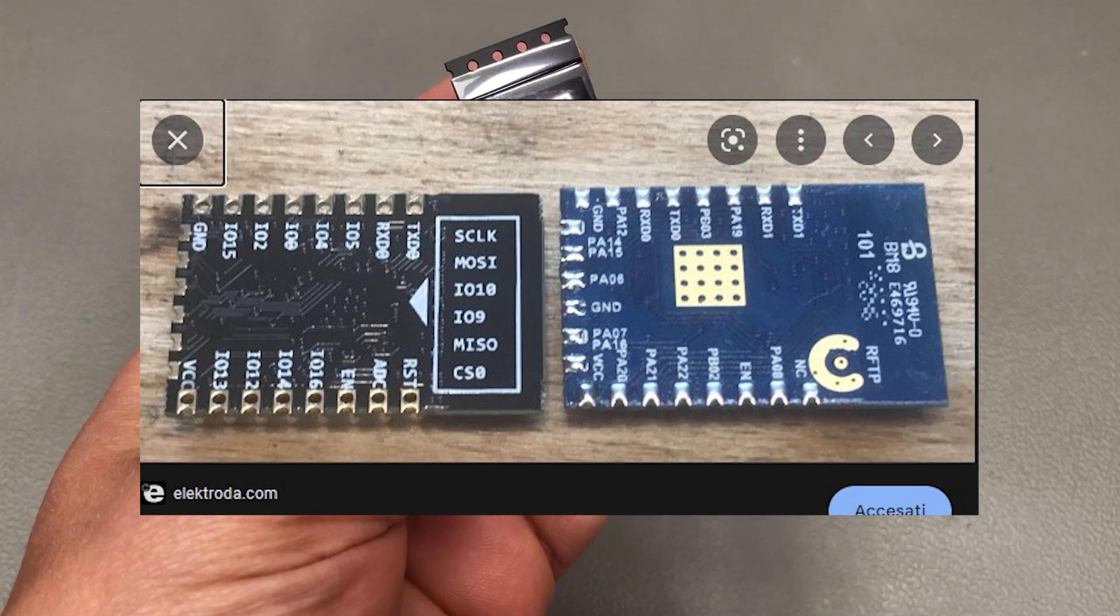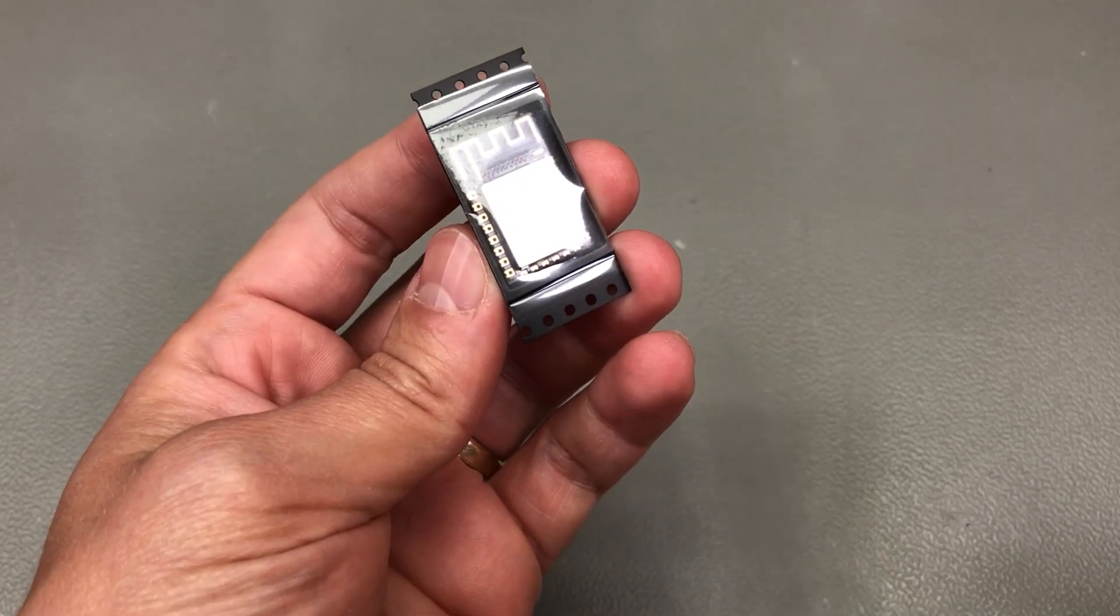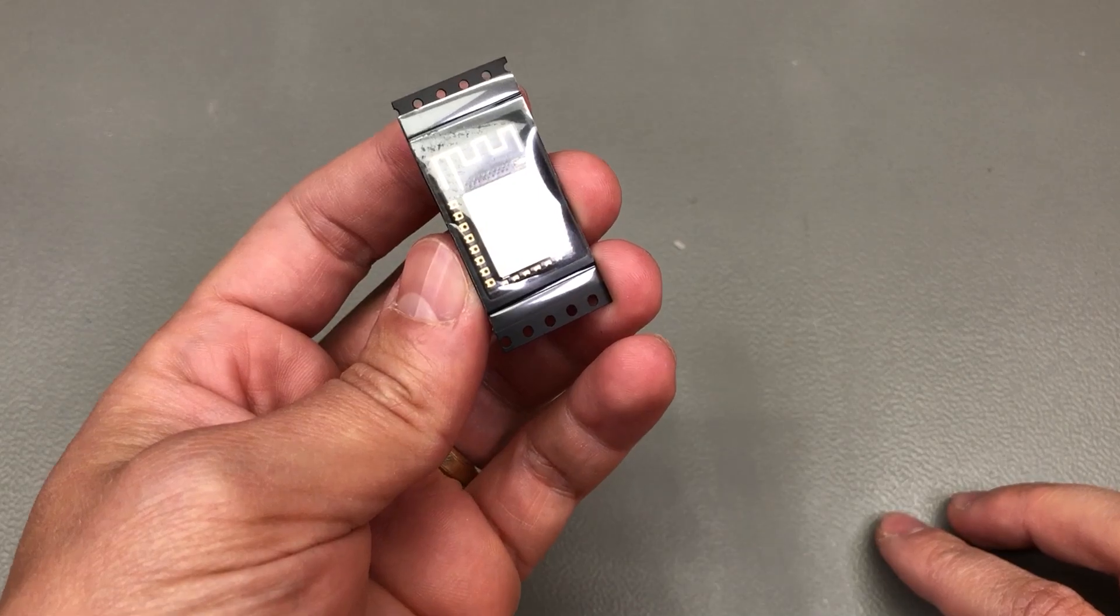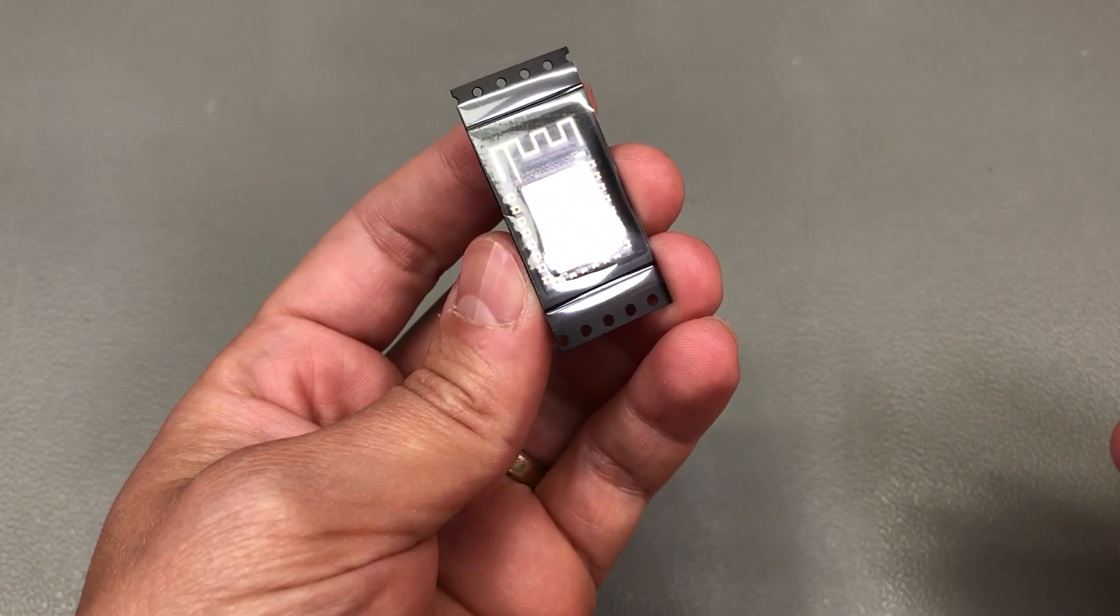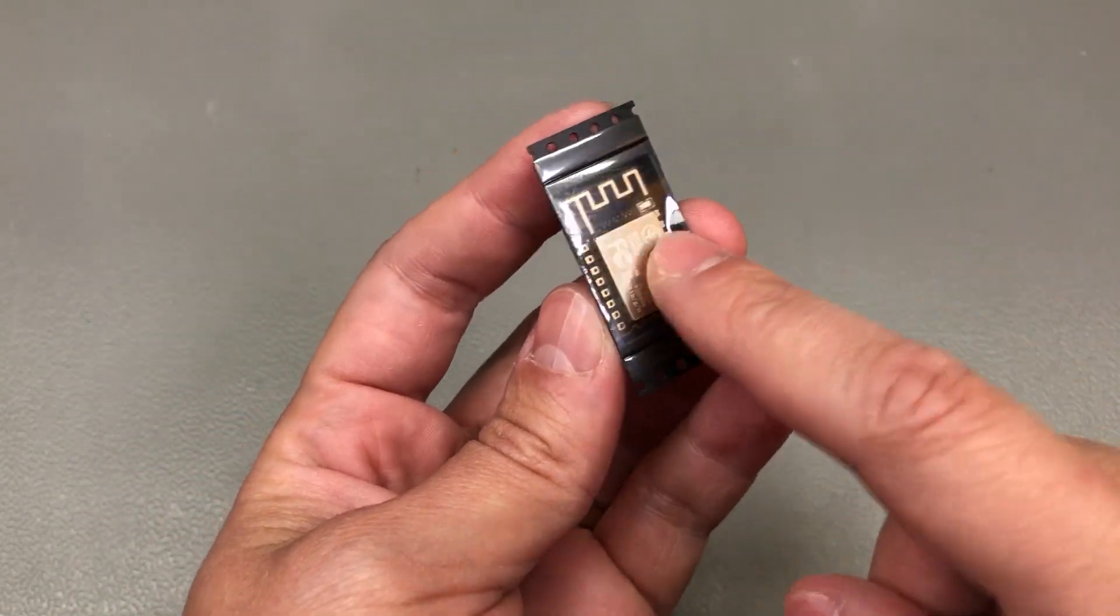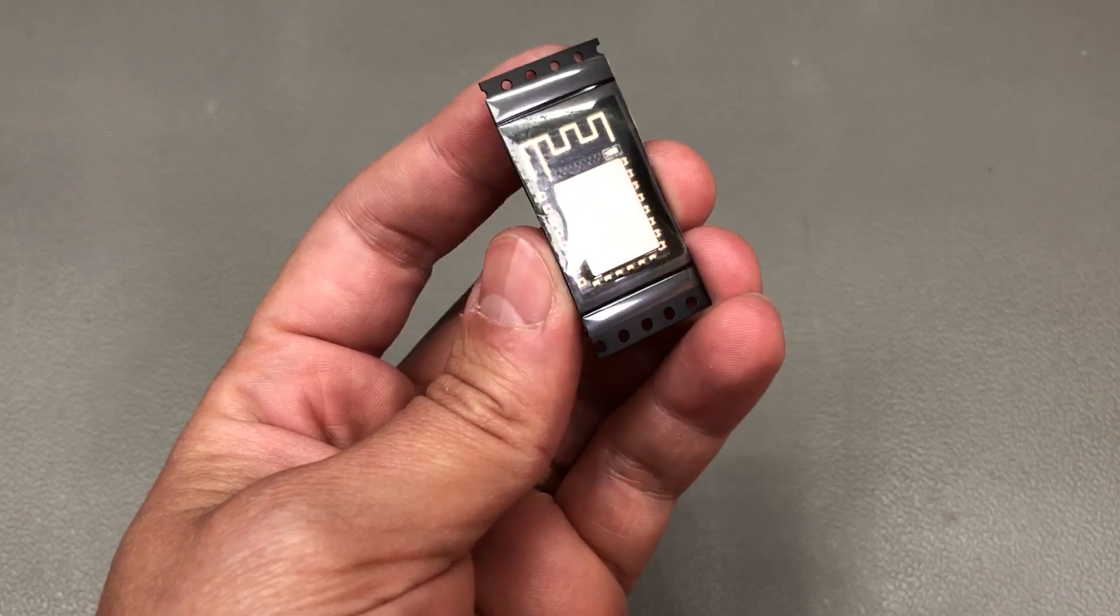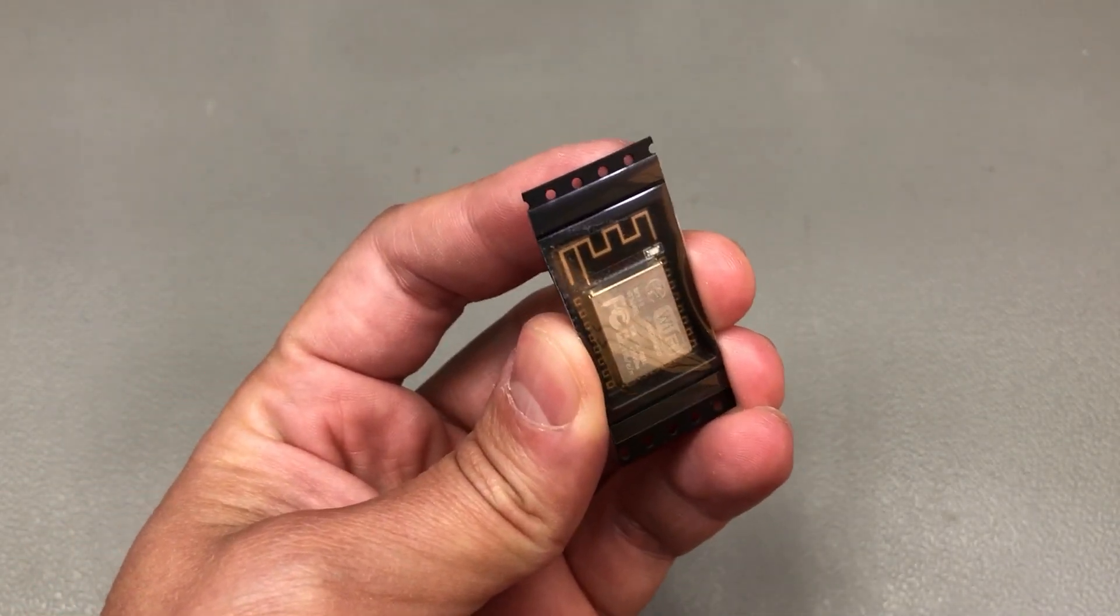However what you can do is to desolder those modules and solder in an ESP8266 module and now you can flash it with your favorite firmware and integrate it. That's why I like to keep a couple of these around because they can be very handy for hacking existing gadgets.